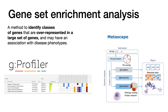Gene sets are usually predefined. For example, the Gene Ontology — referred to as GO — has GO terms, and there are three different categories: biological process, cellular components, and metabolic pathways, as far as I'm aware — correct me if I'm wrong.